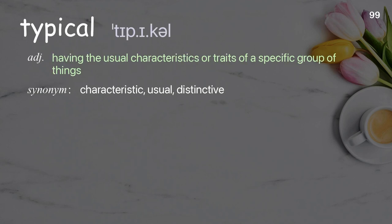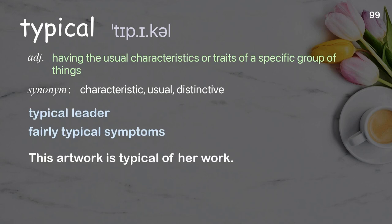Typical: having the usual characteristics or traits of a specific group of things. Examples: typical leader, fairly typical symptoms. This artwork is typical of her work.